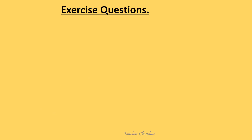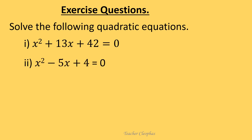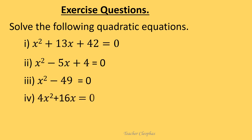Now you can try out a few questions. Solve the following quadratic equations. One: x squared plus 13x plus 42 equals to zero. Two: x squared minus 5x plus 4 equals to zero. Three: x squared minus 49 equals to zero. Four: 4x squared plus 16x equals to zero. Five: x squared minus x equals to zero.